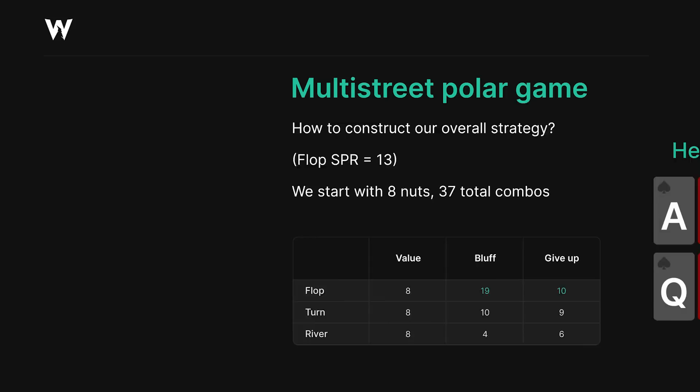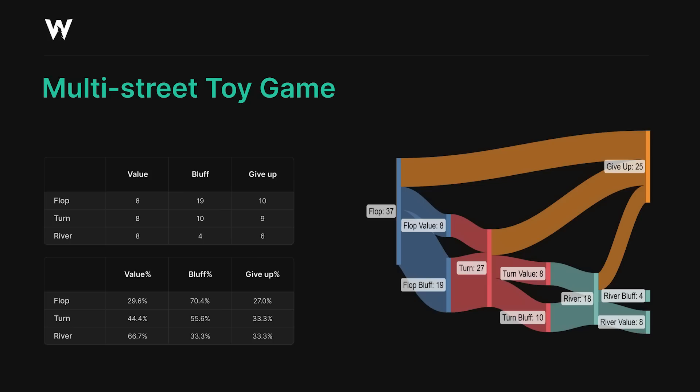The ultimate goal is simple: get your value bets paid off as often as possible without becoming exploitable by over-bluffing. We arrive at the river with a perfectly balanced range of 8 value bets to 4 bluffs, while simultaneously giving up just often enough to prevent villain from snap-folding earlier. The entire purpose of this strategy is to get your value bets paid off as much as possible.